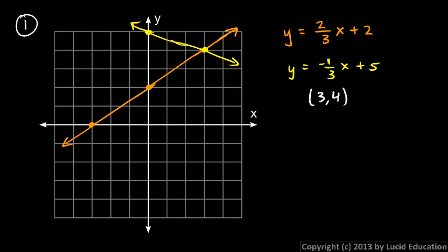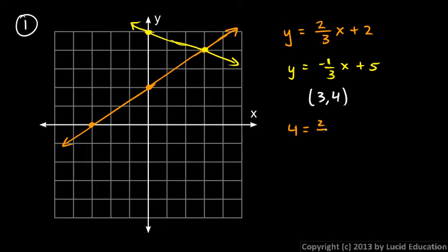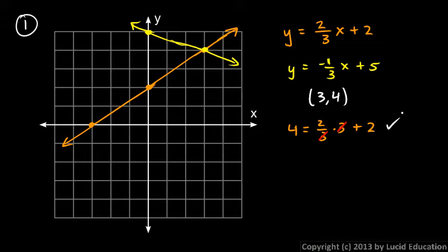And we want to check that. So in this first equation, we're just going to put in three for x and four for y. Rewrite that with those values plugged in, and we get four is equal to negative two-thirds times three plus two. And the question is, is that true? You can see the threes cancel, and we're left with four equals two plus two, and that's correct.